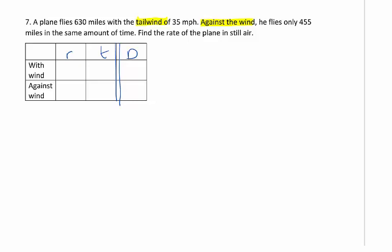The plane flies 630 miles with the wind, so with the wind is 630. It flies only 455 miles against the wind. The key here again is same amount of time, so that's going to be an important one, and we want to try to use that last if we can. We want to know what's the rate of the plane in still air. So we start with x, and with the tailwind, which is helping them, we add 35. Against the wind it's going to hurt it, so we subtract 35.